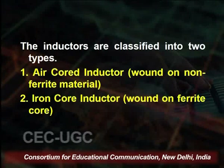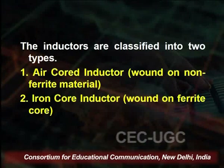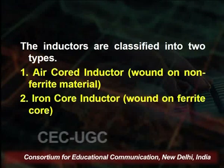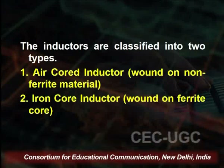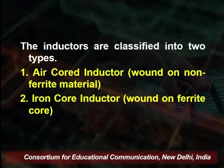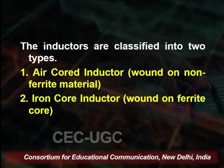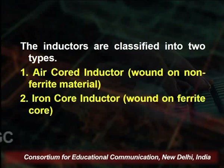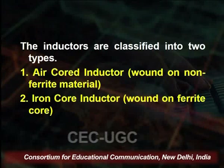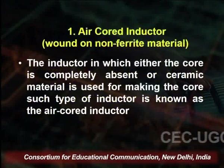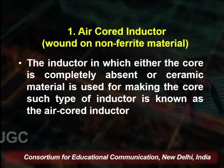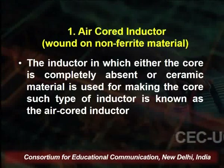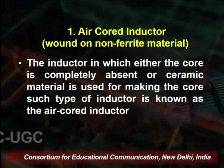The first important type is the air core inductor, which is wound on a non-ferrite material. We use ceramic to wind this inductor. The second is the iron core inductor, where we use ferrite as the name suggests. In broad categories: the air core inductor is wound on non-ferrite materials, and the iron core inductor is wound on ferrite cores. In the air core inductor, we are not using ferrite or magnetic materials — we use ceramics or no material at all.